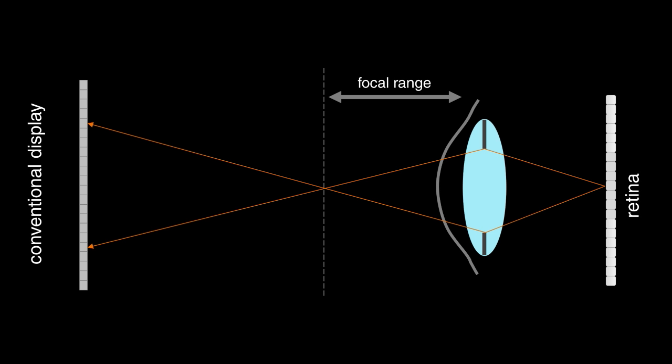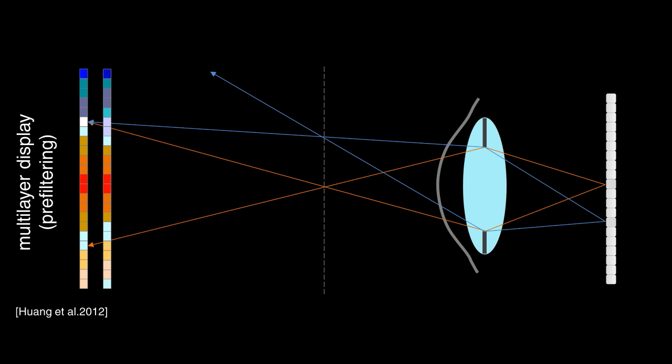For the display outside the focal range of the eye, the image is convolved with the kernel, and the retina receives a blurred image. The multi-layer method prefiltered the image content, so a sharp image is received, but because of the shared pixels, colors are mixed, and the contrast is low.